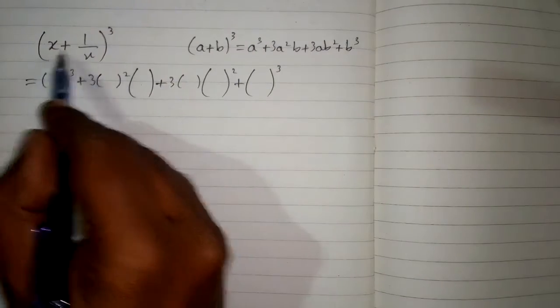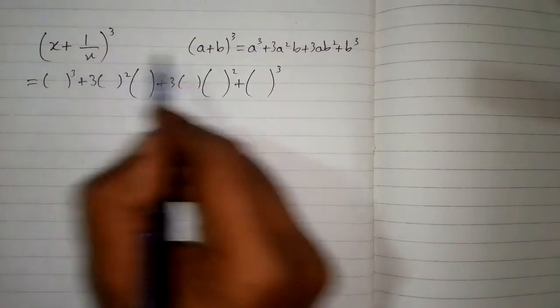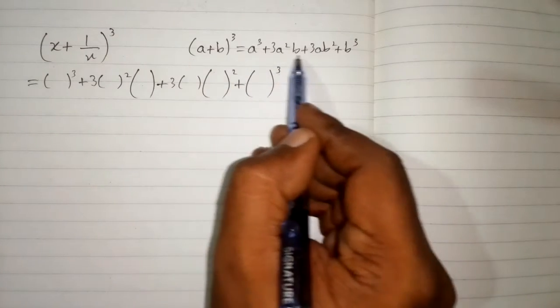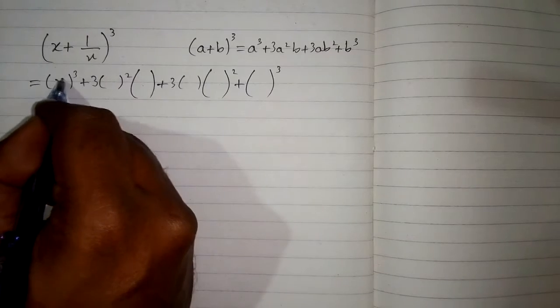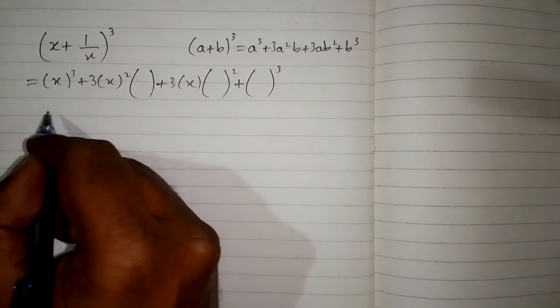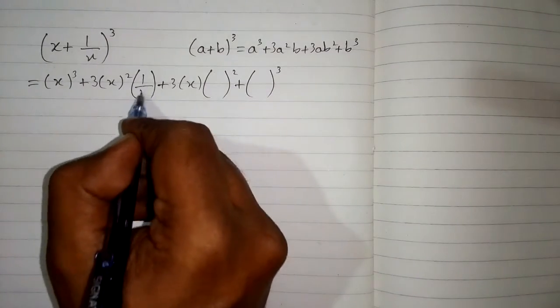We can see that we have x in place of a and 1 upon x in place of b. We will put the values of a and b in their respective places, writing x in place of a and 1 upon x in place of b.